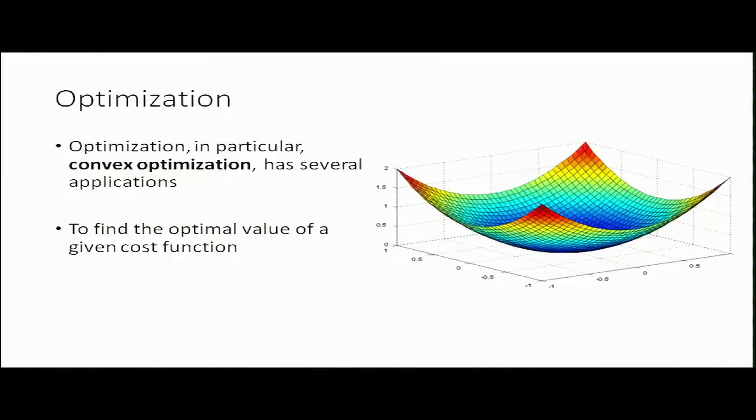What does optimization mean? Optimization, at the core of it in a very abstract sense, is that given a cost function or an objective function that has to be maximized, you find the optimal value of a certain variable that gives you the optimal value of the objective function — essentially you are trying to minimize a cost function.